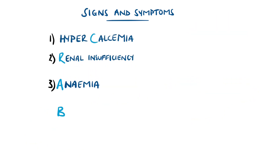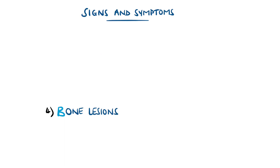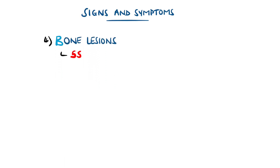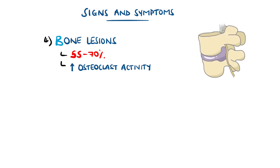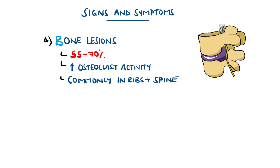B is for bone lesions, seen in between 55 and 70% of cases, which results from the activation of osteoclasts by RANK-L overproduction. These lesions are most commonly in the spine, skull, and ribs, which is why back pain is commonly found in these patients.